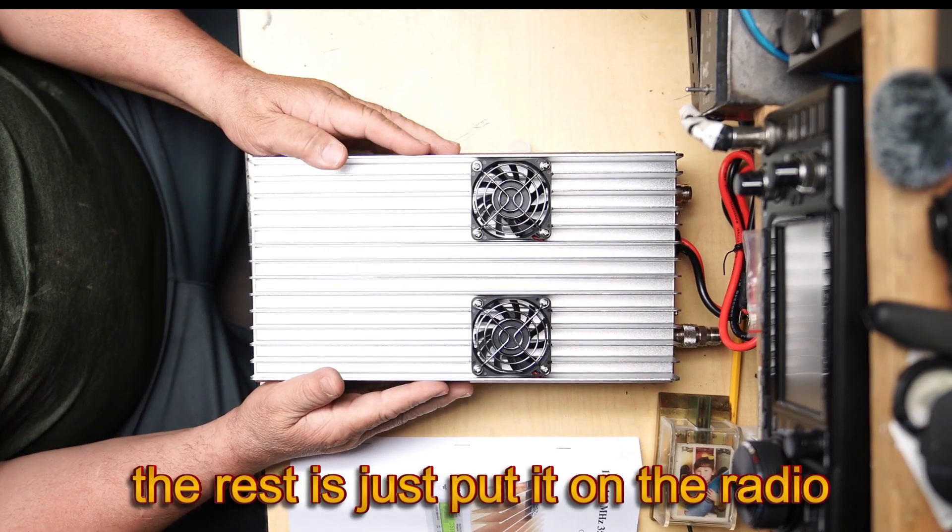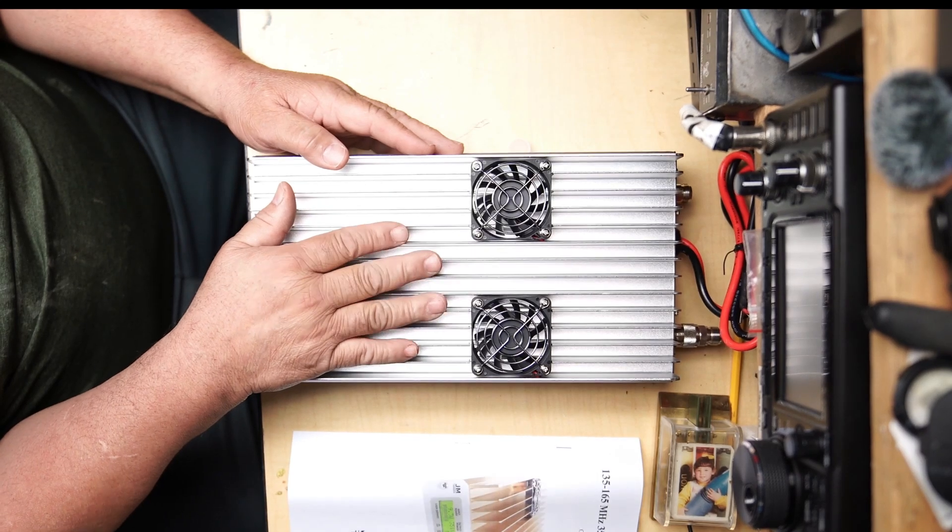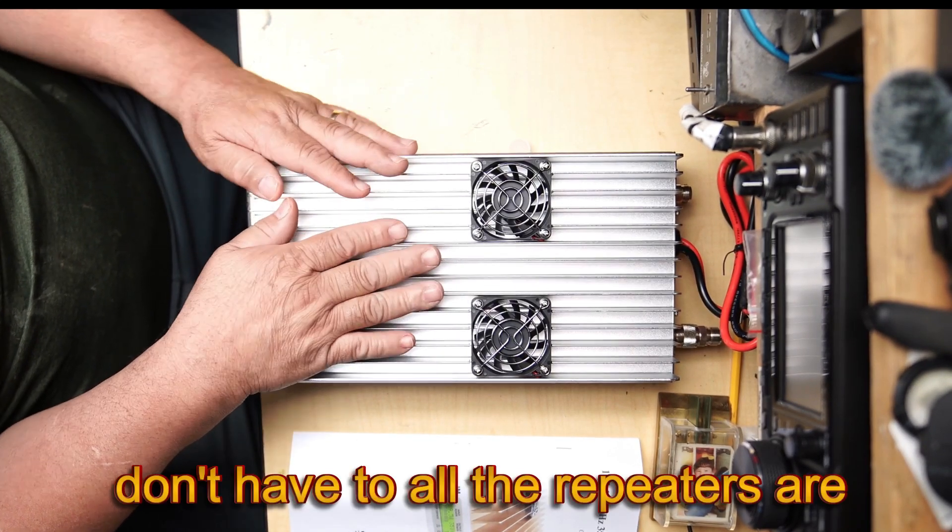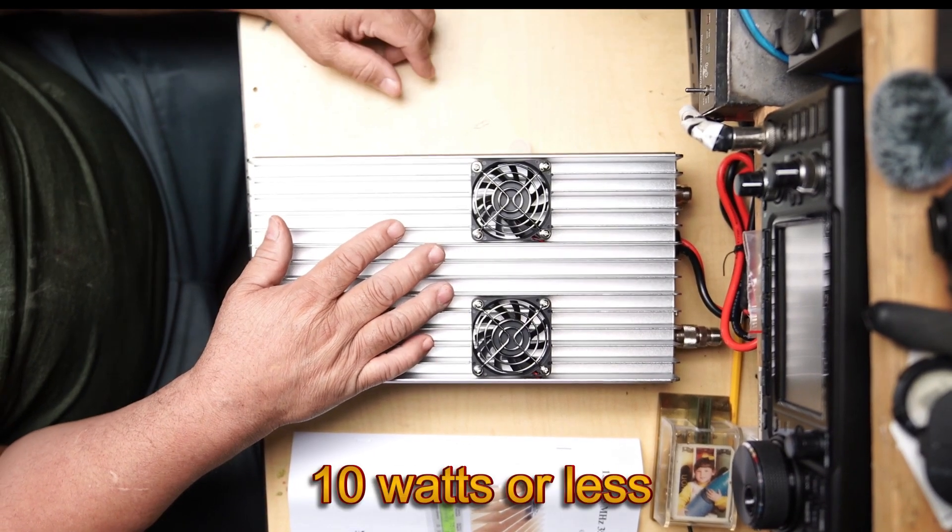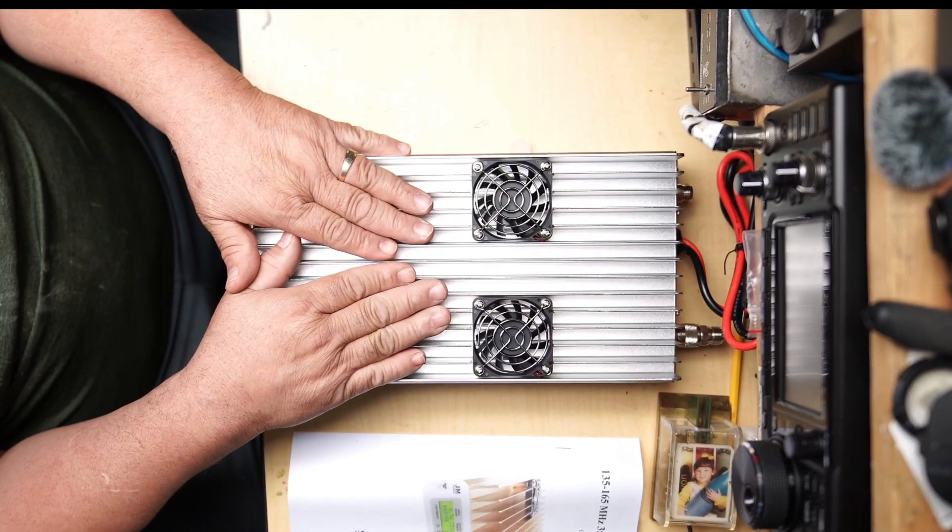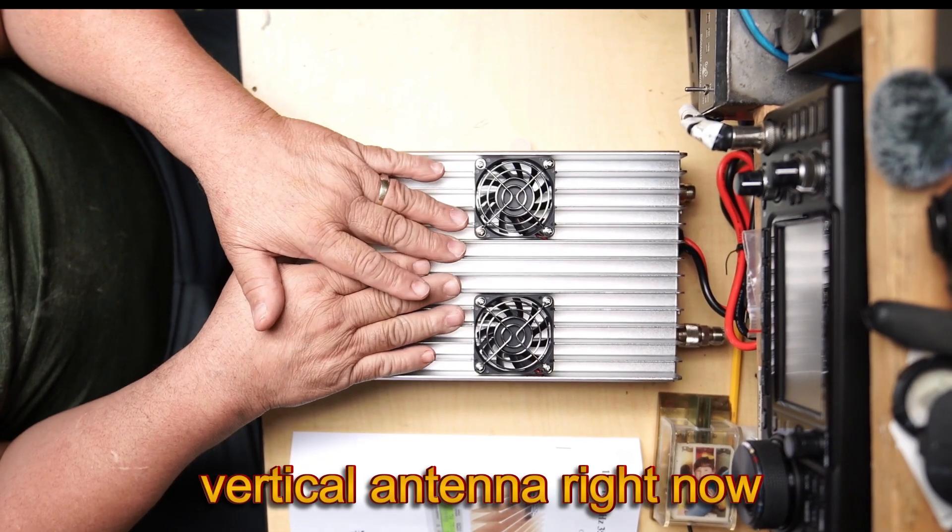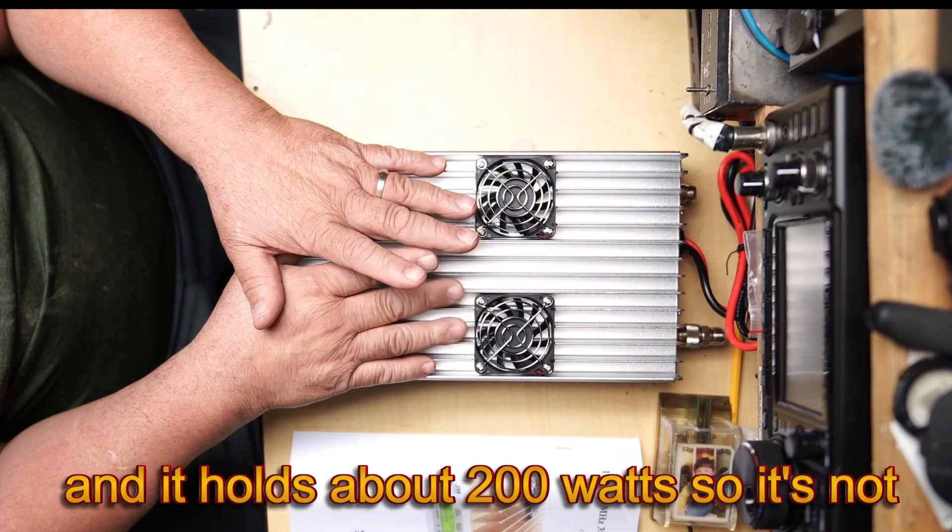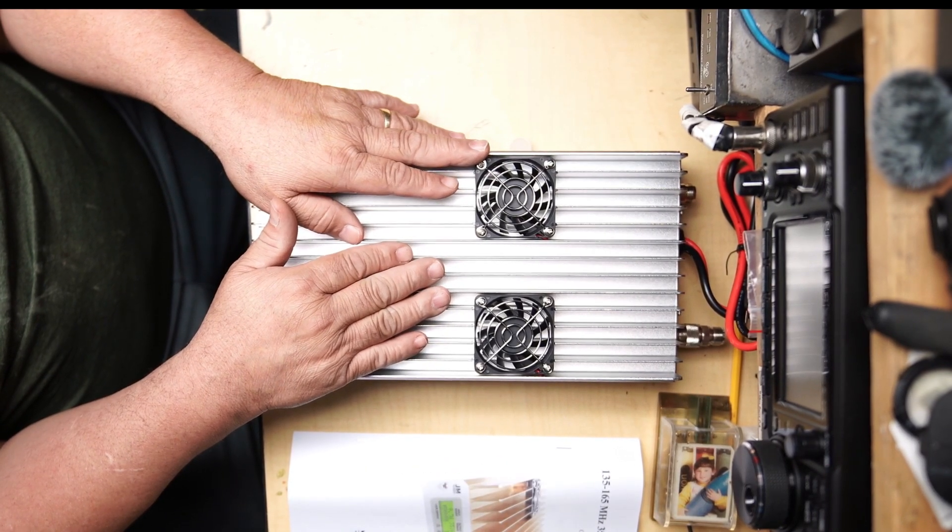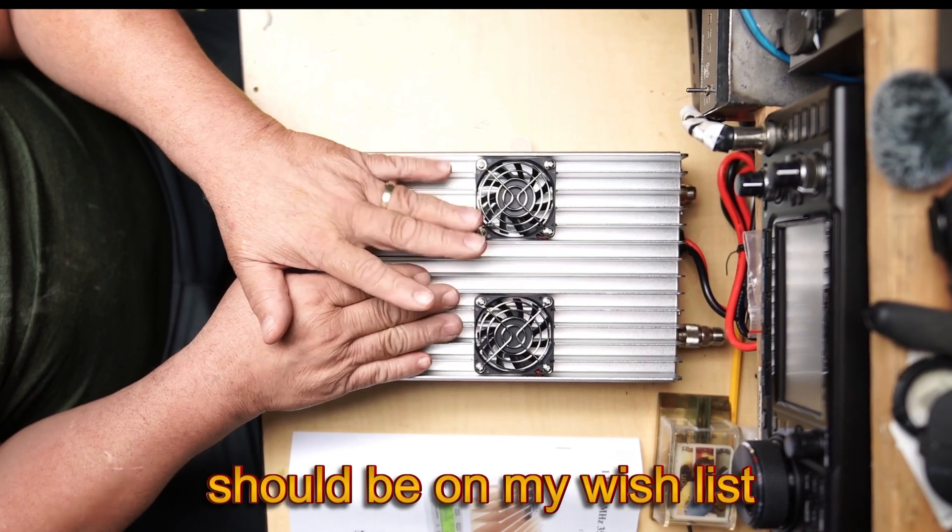The rest is just put it on the radio, try this for sideband and CW. I don't intend to use on any frequency on FM. I don't have to. All the repeaters are accessible with 10 watts or less. But this is going to be for CW and single sideband. I gotta get me another antenna. I have a vertical antenna right now, and it holds about 200 watts, so it's not going to hold the entire power of this amplifier. So in the future another antenna is on, should be on my wish list.